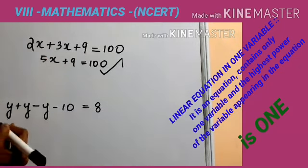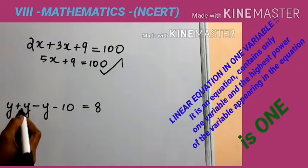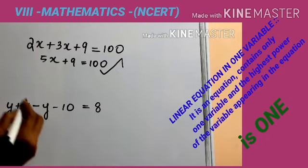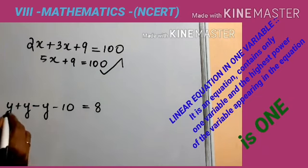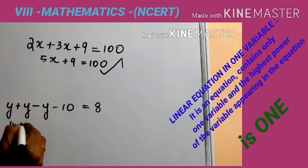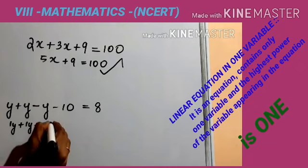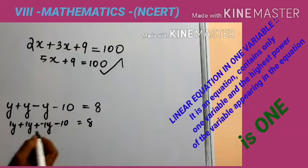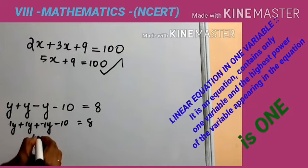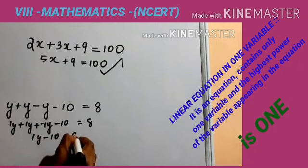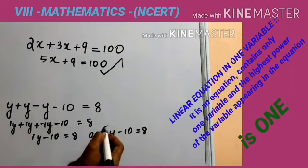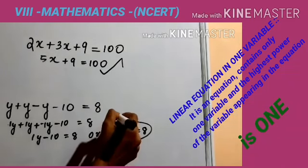This also we can rewrite. y means 1y, so 2y minus 1y equals 2 minus 1, which gives 1y. So the equation becomes y minus 10 equals 8. Now it is an example for a linear equation in one variable.